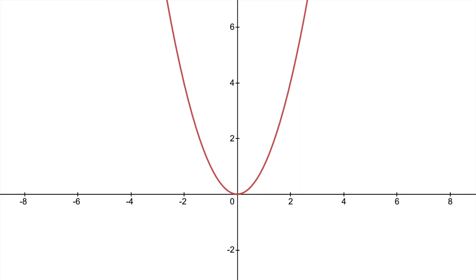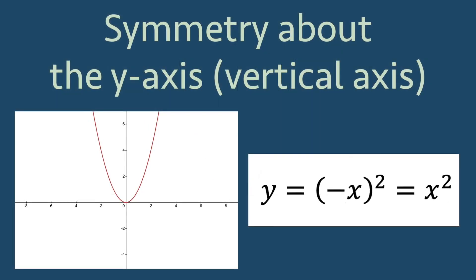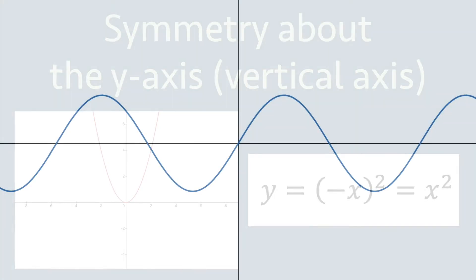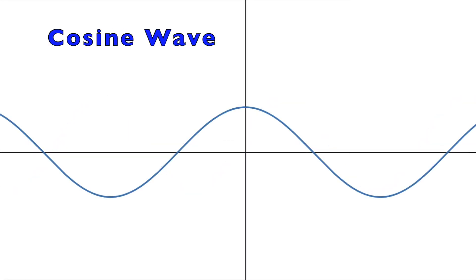If we flip the whole parabola over the vertical axis, it lands right back where it started. We can also verify this symmetry with the equation by replacing x with negative x. y equal parentheses negative x squared is the same thing as x squared. The sine wave we saw before is not symmetric about the y-axis, but the cosine wave is.